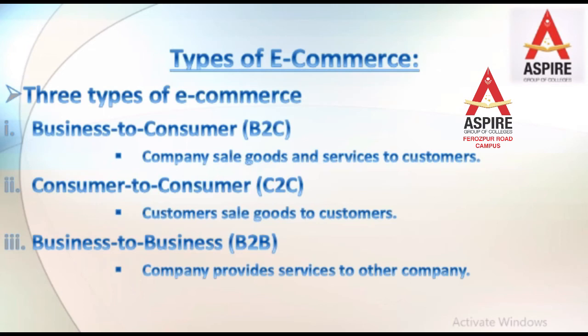For example, a company that wants to advertise a phone will hire an advertising company to create ads. That advertising company is providing its service to another company. This is called business to business e-commerce. All of this work happens online through computer networks. These are the three types of e-commerce: business to business, consumer to consumer, and business to consumer. I hope you understood this lecture. We will meet in the next lecture with the next topic. Take care, Allah Hafiz.